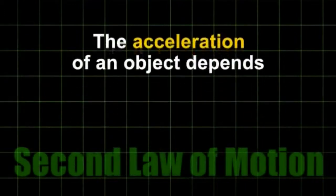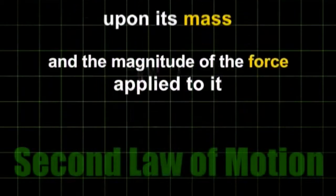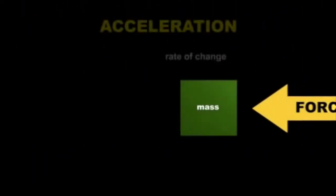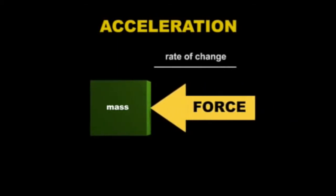The acceleration of an object depends upon its mass and the magnitude of the force applied to it. When an unbalanced force acts upon an object, the motion of the object changes. The rate of this change over time is called acceleration.